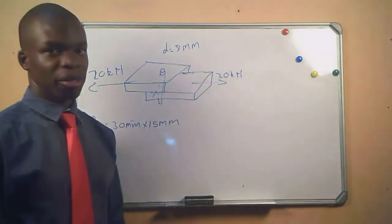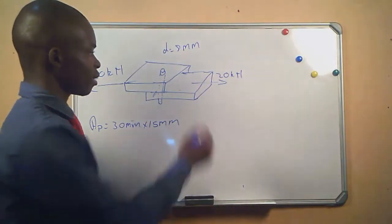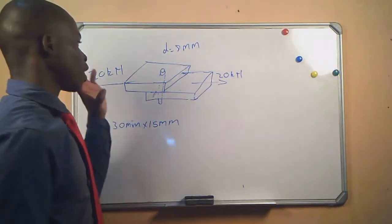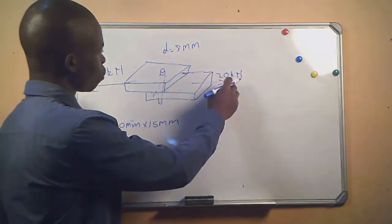So this is the information that we are given. First we are given a diagram like this and then we are given this information. The force that is acting on this pin is 20 kilonewtons.